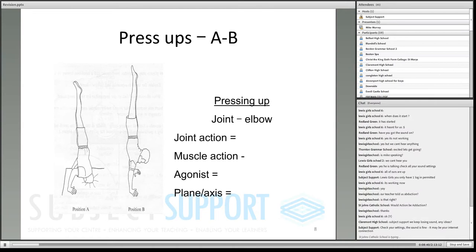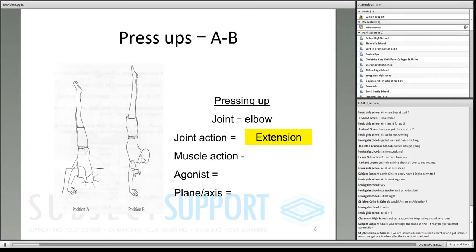Okay, 30 seconds are up. Joint action, dead simple. That's extension. We know that. Going from a slightly bent arm to a straight arm, straightening the arm, increasing the angle. It's called extension. The main muscle causing the contraction is the triceps. Sorry, the main action is concentric, and the main agonist is the triceps.